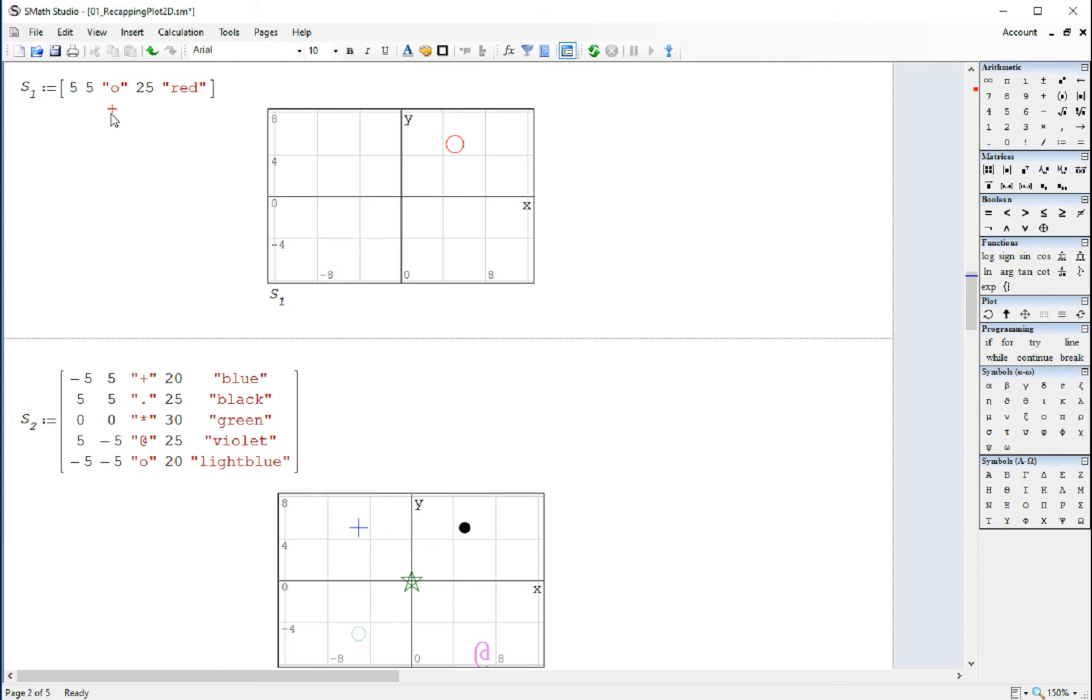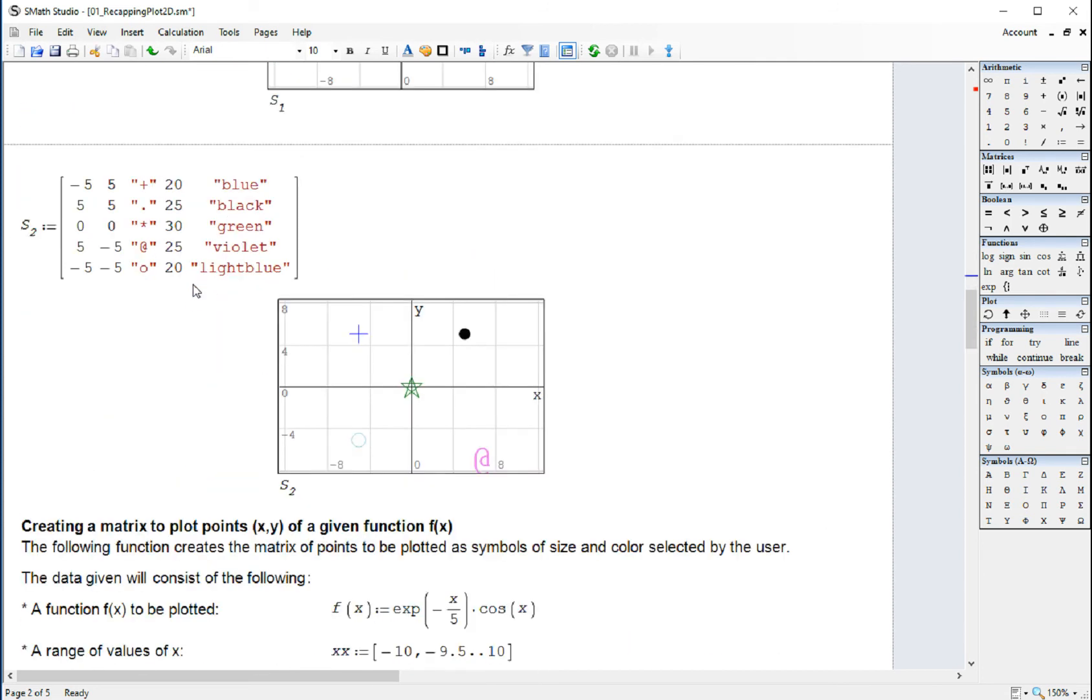And it will change the color right there. That is a single symbol that you're going to plot. In the next example, I have a matrix of five rows, and each row represents a symbol.